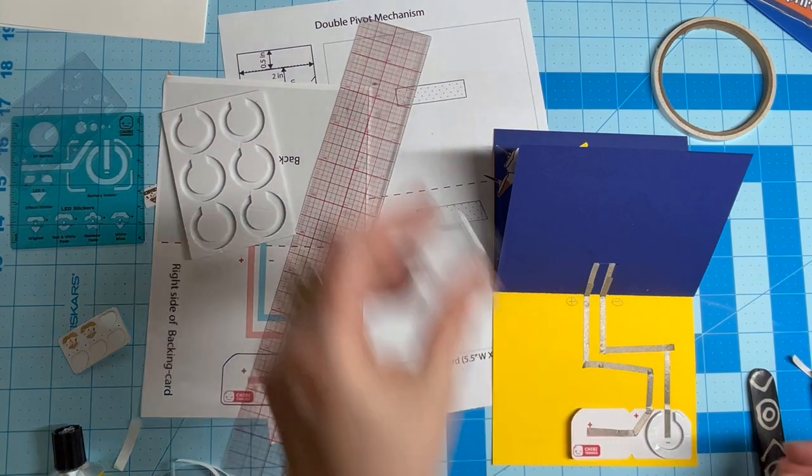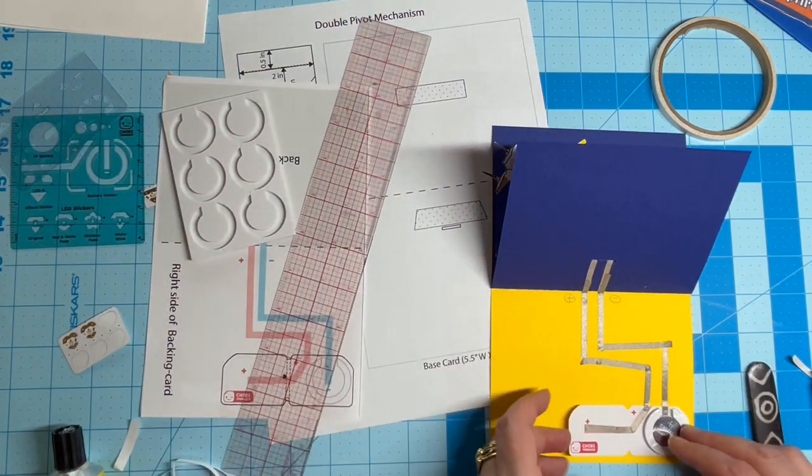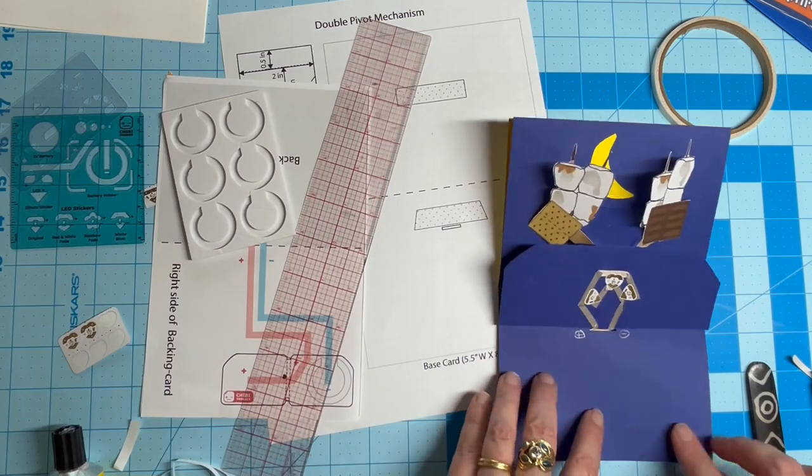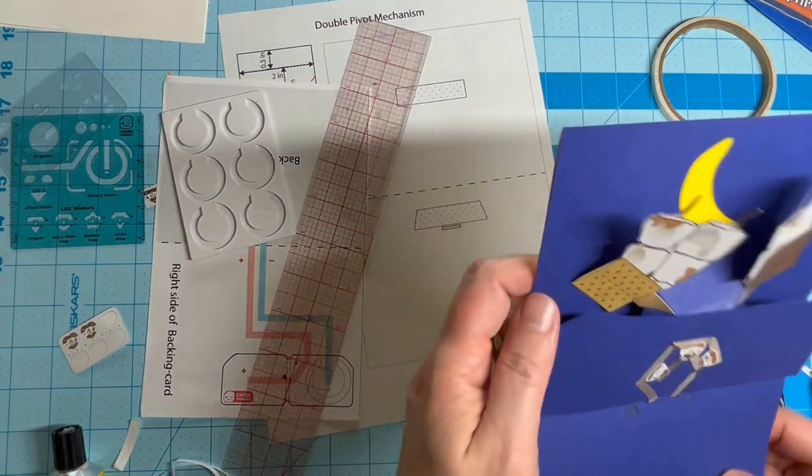I'm using a foam ring in this example, which creates a nice push-button effect when using a thin 3-volt battery, such as a CR2016.